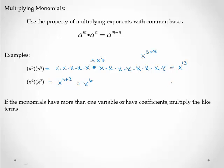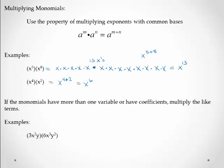Now if the monomials have more than one variable or have coefficients, you multiply the parts that are alike. So for example, I have 3x squared y times 6x to the 3rd y squared. So I'm going to do 3 times 6. That gives me 18. x squared times x to the 3rd. So I'm going to write this down long ways first and then we'll simplify it just so you can see the process.